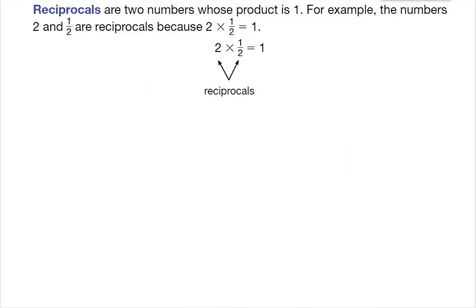All right, the second half of this lesson is on reciprocals. Now, a reciprocal, reciprocals are two numbers whose product is 1. For example, 2 and 1 half, when I multiply them together, equal 1. So those are reciprocals.